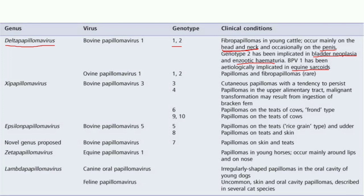Ovine Papilloma Virus 1 also has two genotypes, 1 and 2, and produces papillomas and fibropapillomas, though rarely. The next genus is Xipa papilloma virus, which includes Bovine Papilloma Virus 3, with important genotypes 3, 4, and 6, and also including genotypes 9 and 10.